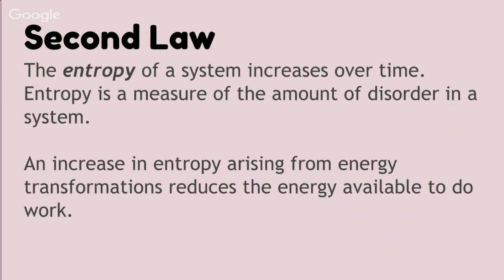Our second law is about entropy. The entropy of a system increases over time. Entropy is a measure of the amount of disorder in a system. For example, think about diffusion of molecules — if you spray Axe body spray in one corner of a room, it will diffuse over the entire room over a period of time, and that's an example of entropy.